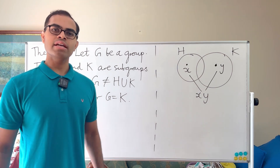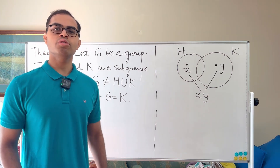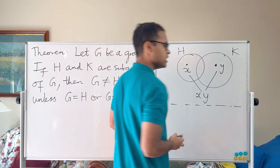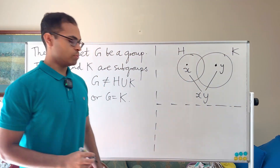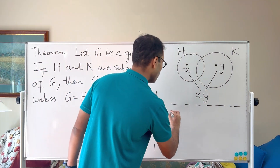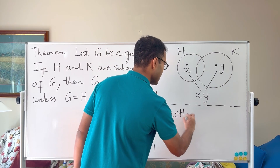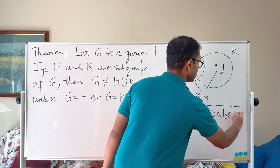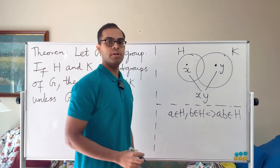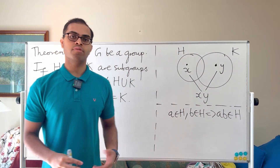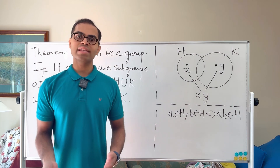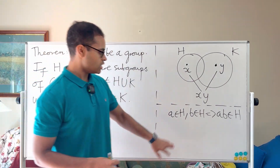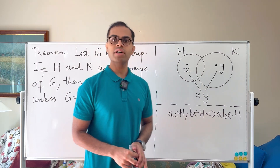Let me explain intuitively why this approach works. Think about what it means to be a subgroup. For H: if a is in H and b is in H, then a times b is also in H — that's closure. We also require inverses of elements in H to be in H, and the identity to be in H.